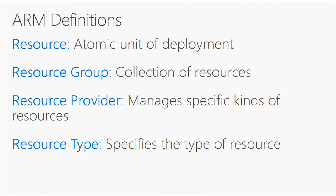The key terms: a resource is the unit of work — a storage account or virtual machine, for example. Resources live in resource groups; every resource must live in a resource group. Resource providers like Microsoft.Compute or Microsoft.Storage are responsible for managing individual resources. And there are resource types within those providers, like Microsoft.Networking slash subnets or availability sets.